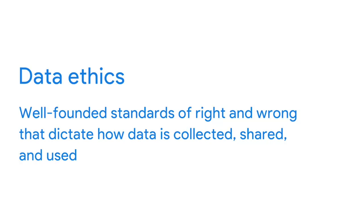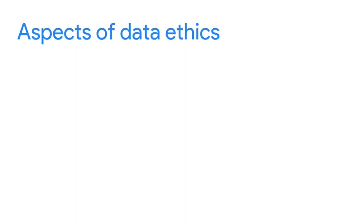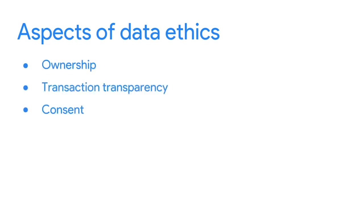Ethics refers to well-founded standards of right and wrong that prescribe what humans ought to do, usually in terms of rights, obligations, benefits to society, fairness, or specific virtues. Data ethics refers to well-founded standards of right and wrong that dictate how data is collected, shared, and used. Since the ability to collect, share, and use data in such large quantities is relatively new, the rules that regulate and govern the process are still evolving. The importance of data privacy has been recognized by governments worldwide, and they've started creating data protection legislation to help protect people and their data. The GDPR of the European Union was created to do just this. The concept of data ethics includes issues related to transparency and privacy, and tries to get to the root of the accountability companies have in protecting and responsibly using the data they collect.